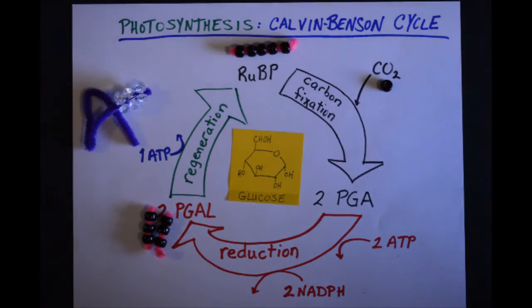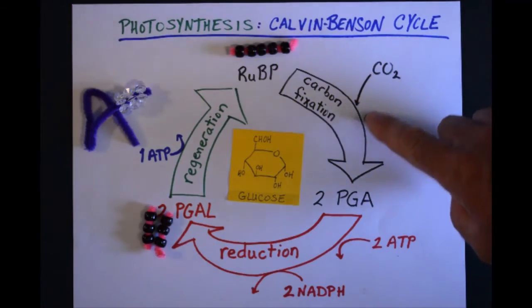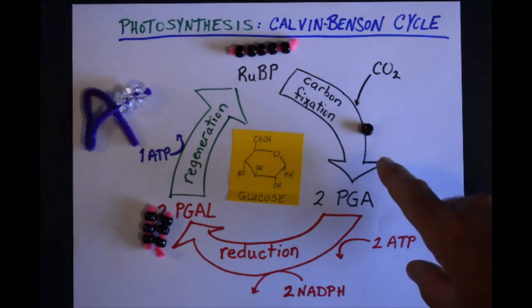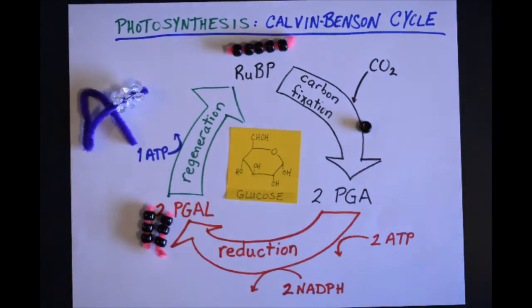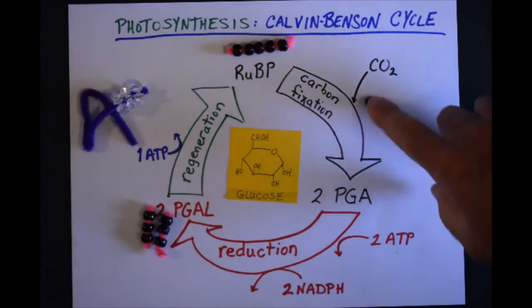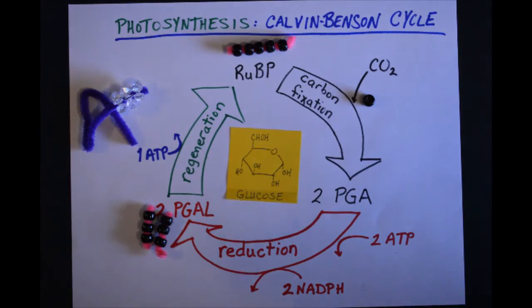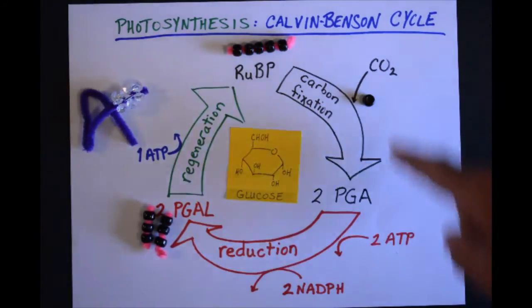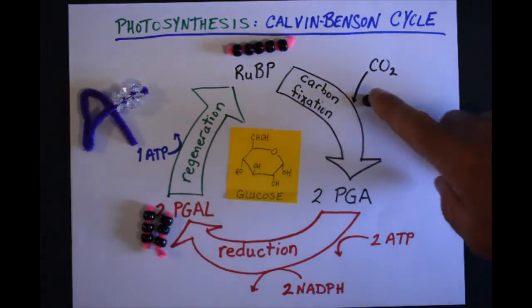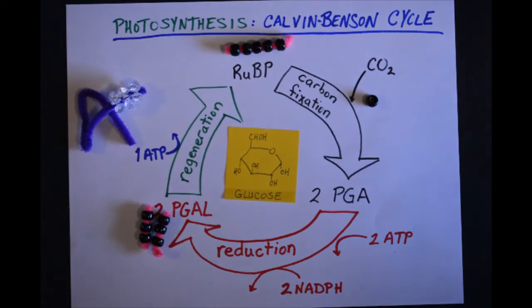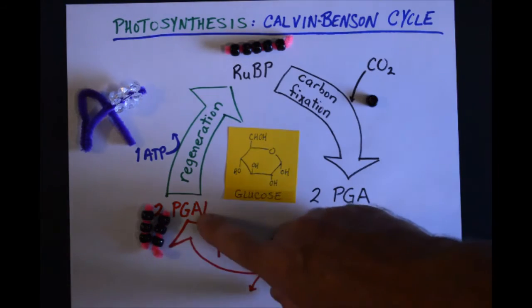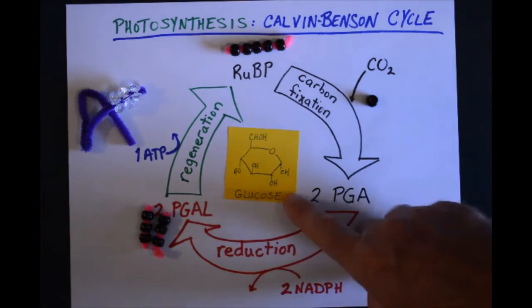Well, something doesn't quite add up here. I added one carbon, making a six-carbon chain, and that I suppose I could use to make glucose, but not with just one carbon. True. So this cycle is going to need to happen six times in order to add six carbons, and then we will have enough phosphoglyceraldehyde to form a glucose.